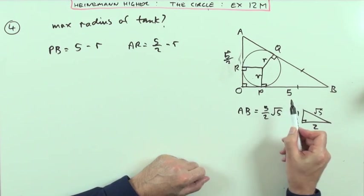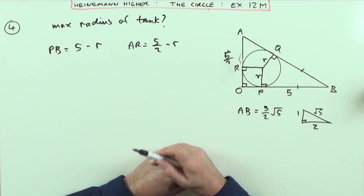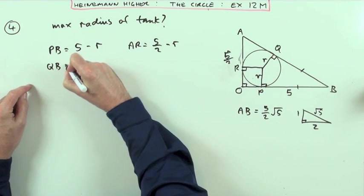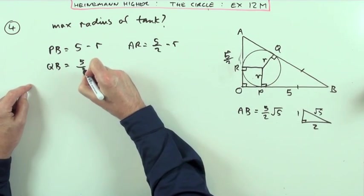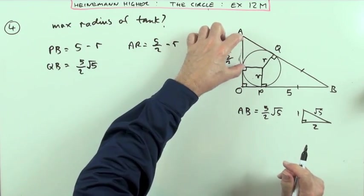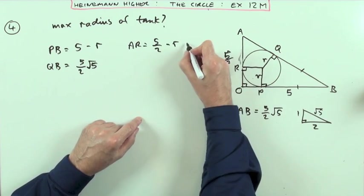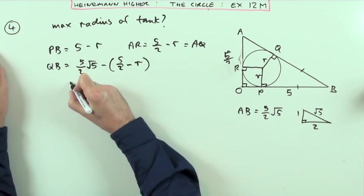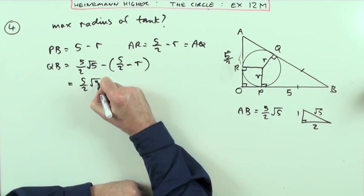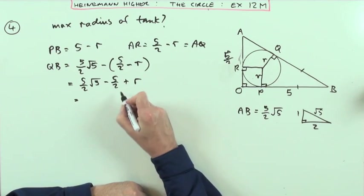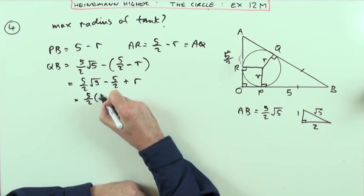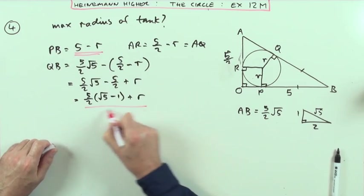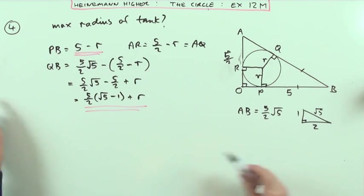Or you could do the Pythagoras itself if you like. That means that qb would be the whole length which is (5/2)√5 minus this length here, because aq must be the same as that, minus the (5/2) minus r. Maybe tidy that expression up. So I've got (5/2)√5 minus 5/2 but plus an r. I can take the 5/2 out of that: (5/2)(√5 - 1) plus r. So I've got the length of these two parts - the two sides of this tangent kite.